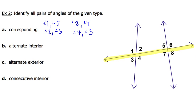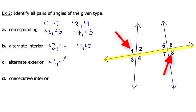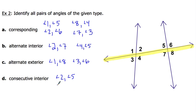Next, moving on to alternate interiors — we're going to have two pairs. One pair is angle two paired with angle seven, and the other pair is angles four and five. For alternate exteriors: angle one is paired with angle eight, and angle three is paired with angle six. Lastly, for consecutive interiors — remember, consecutive means on the same side of the transversal — angle two is paired with angle five, and angle four is paired with angle seven as my other pair of consecutive interior angles.